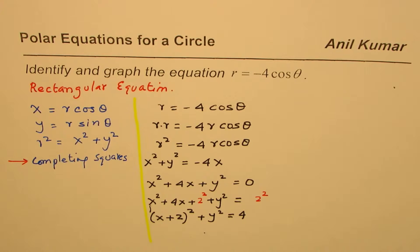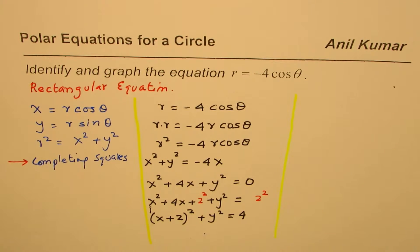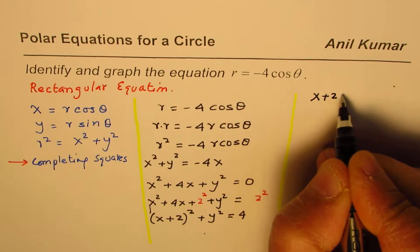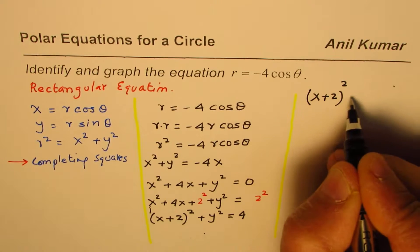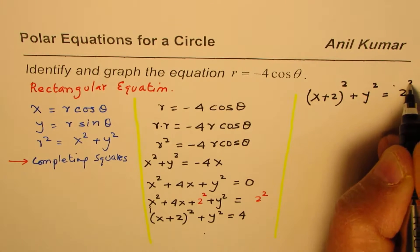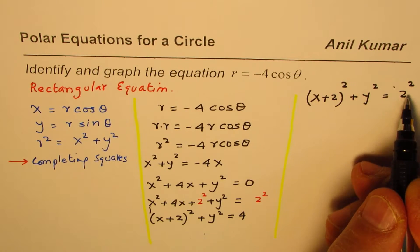Correct. Now, what does this remind you of? x plus 2 whole square plus y squared equals 4. Let me rewrite this equation here. We have x plus 2 whole square plus y squared equals 4 as 2 squared. So, it means we are talking about a circle whose radius is 2.